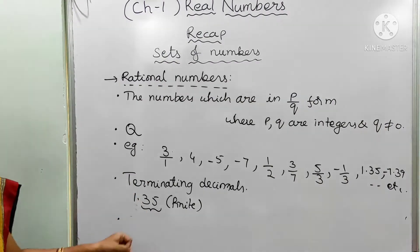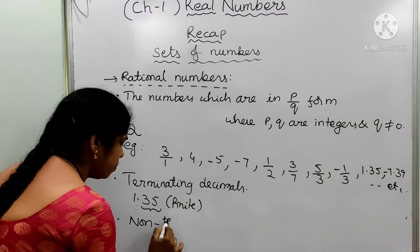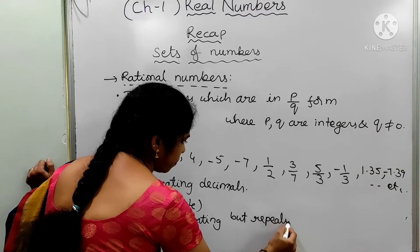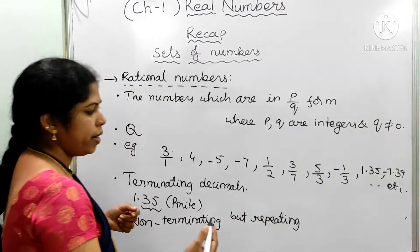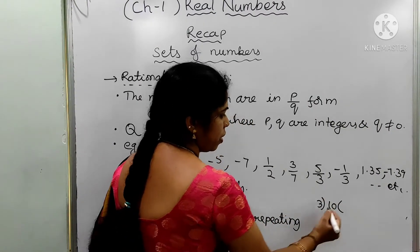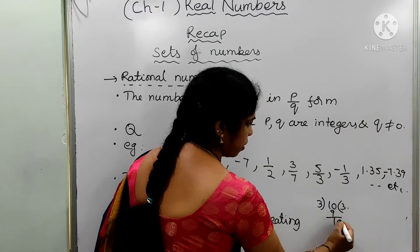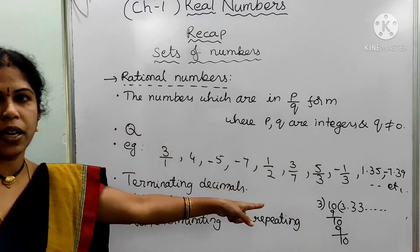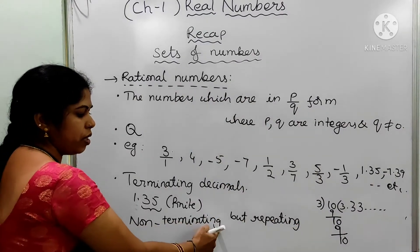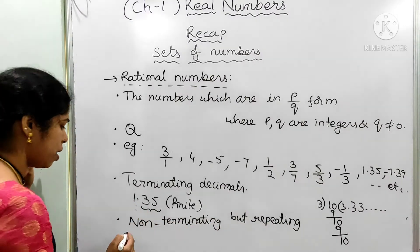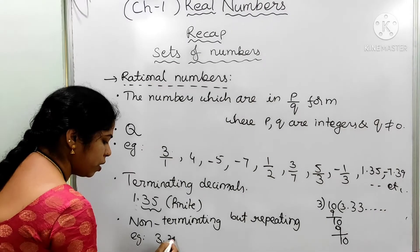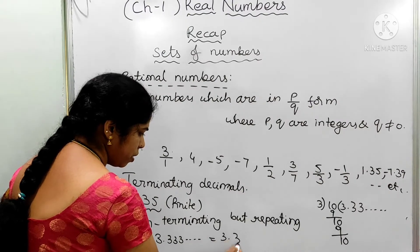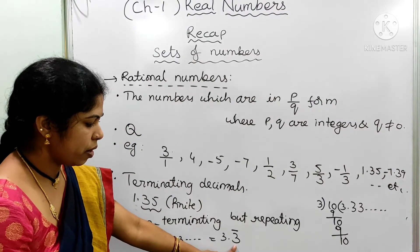We have one more type of decimal numbers, that is non-terminating but repeating. For example, when we divide 10 by 3, the decimal part will not have any end — that is unlimited. Non-terminating but repeating decimals are also called rational numbers. Example: 3.333... We can write 3.333... as 3.3 bar, where the repeating number is written under the bar.